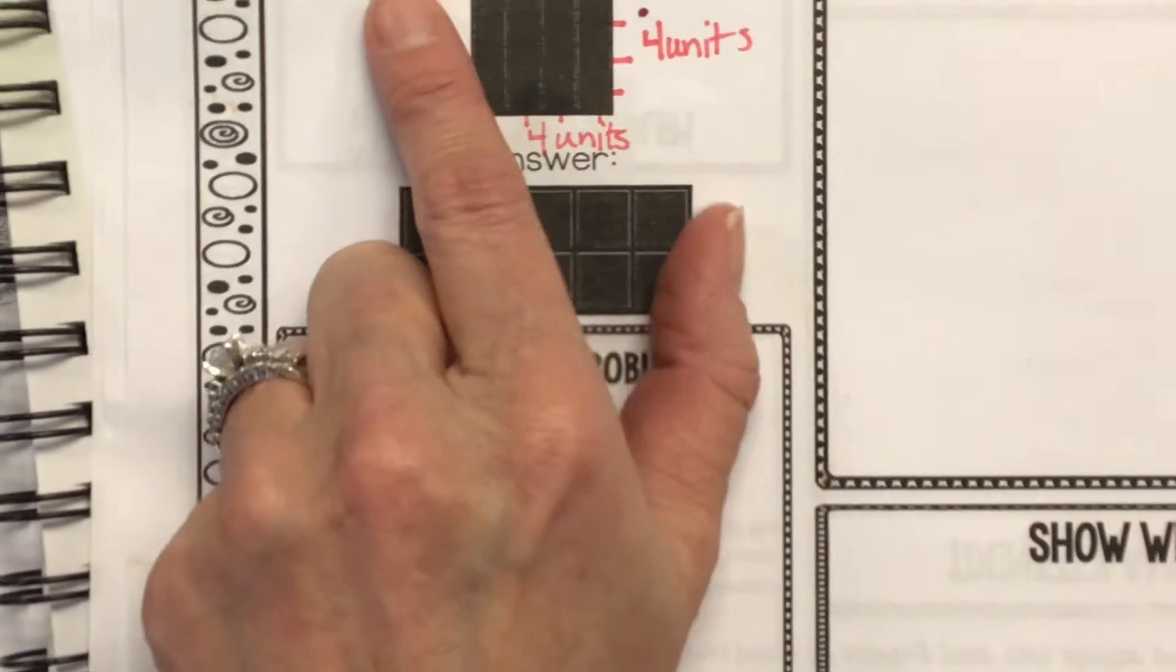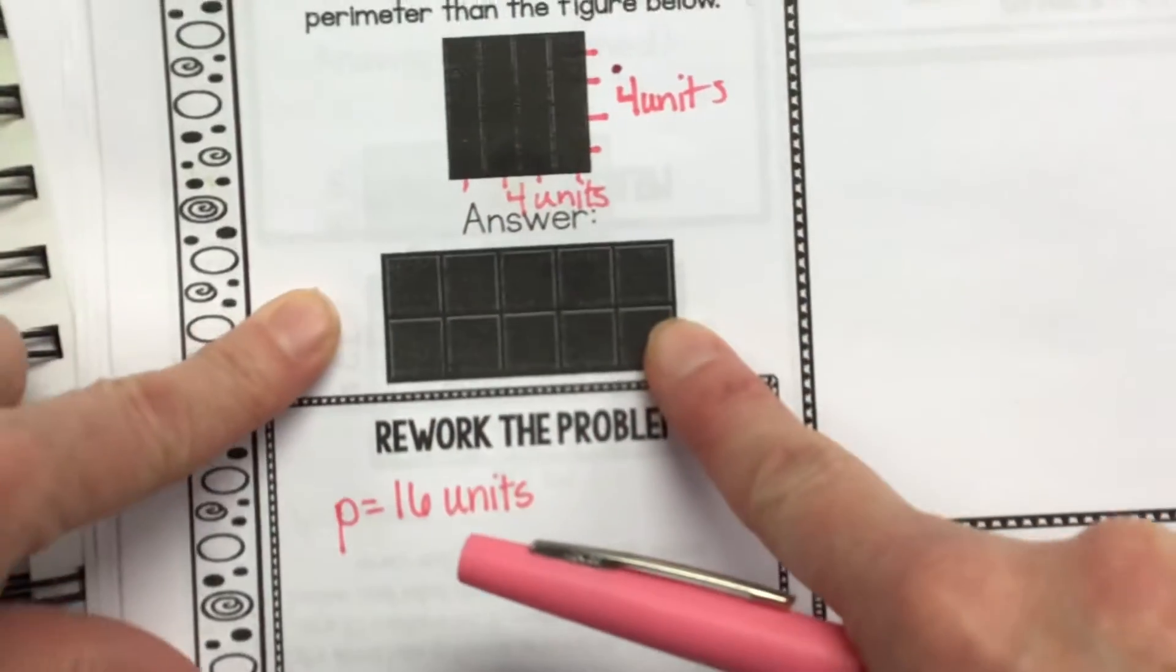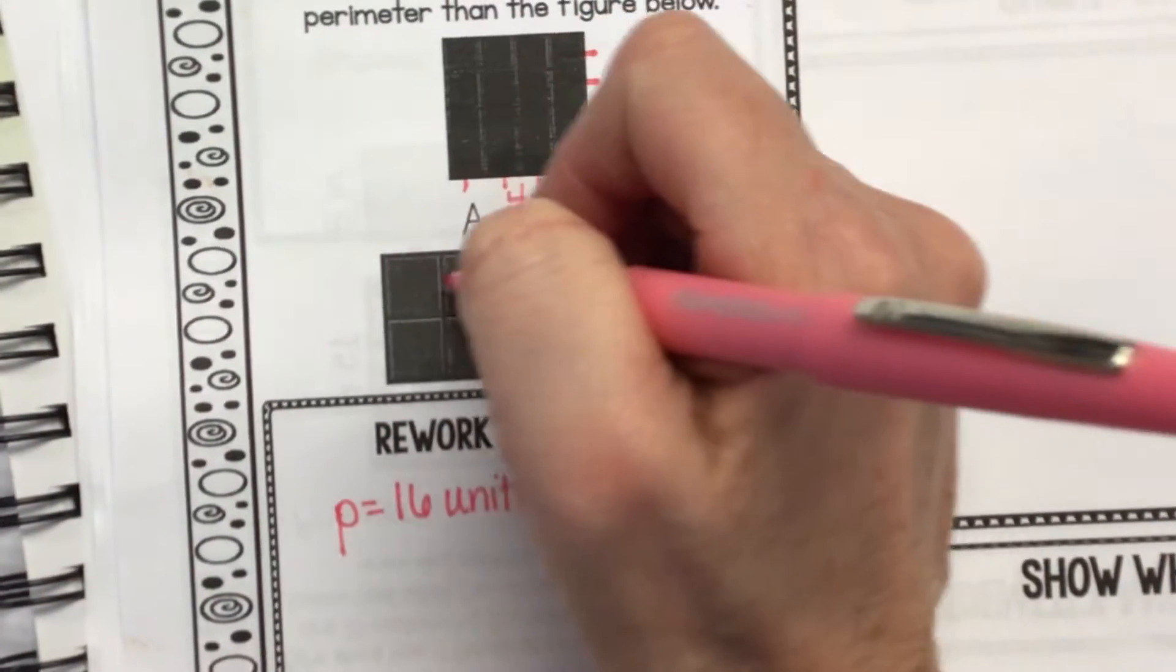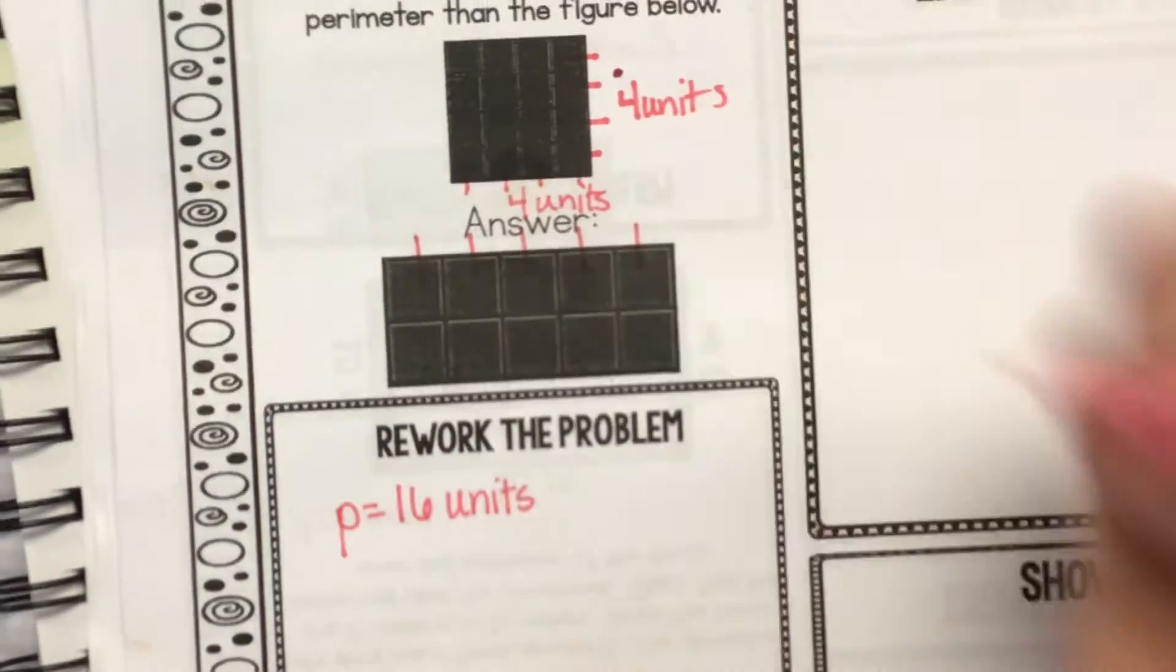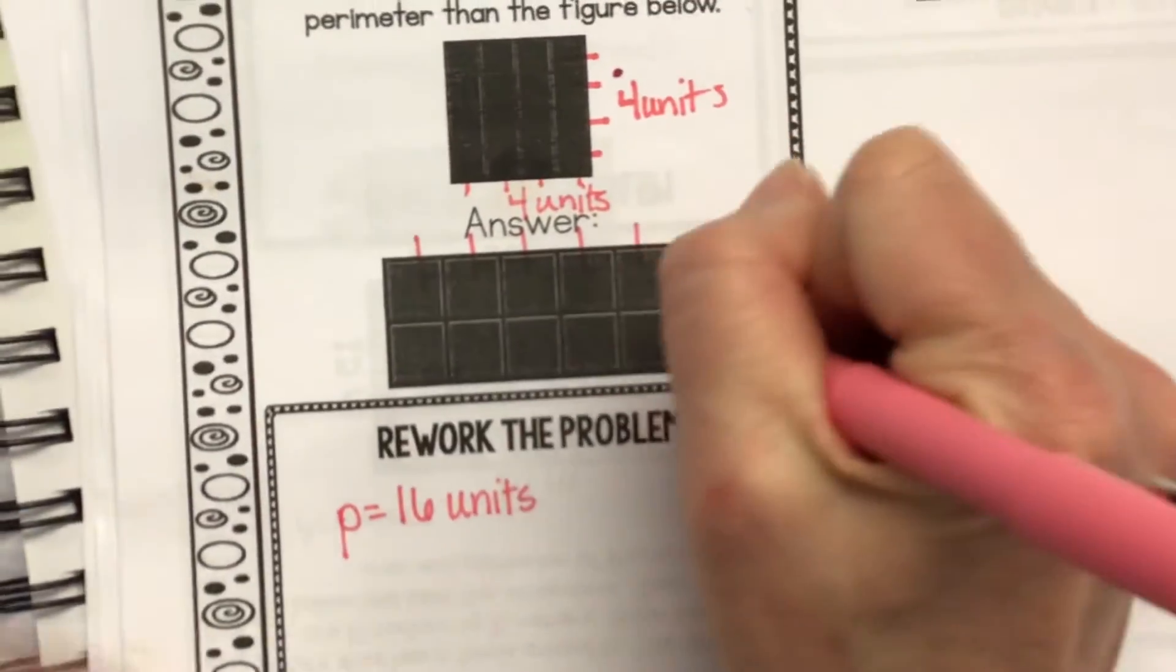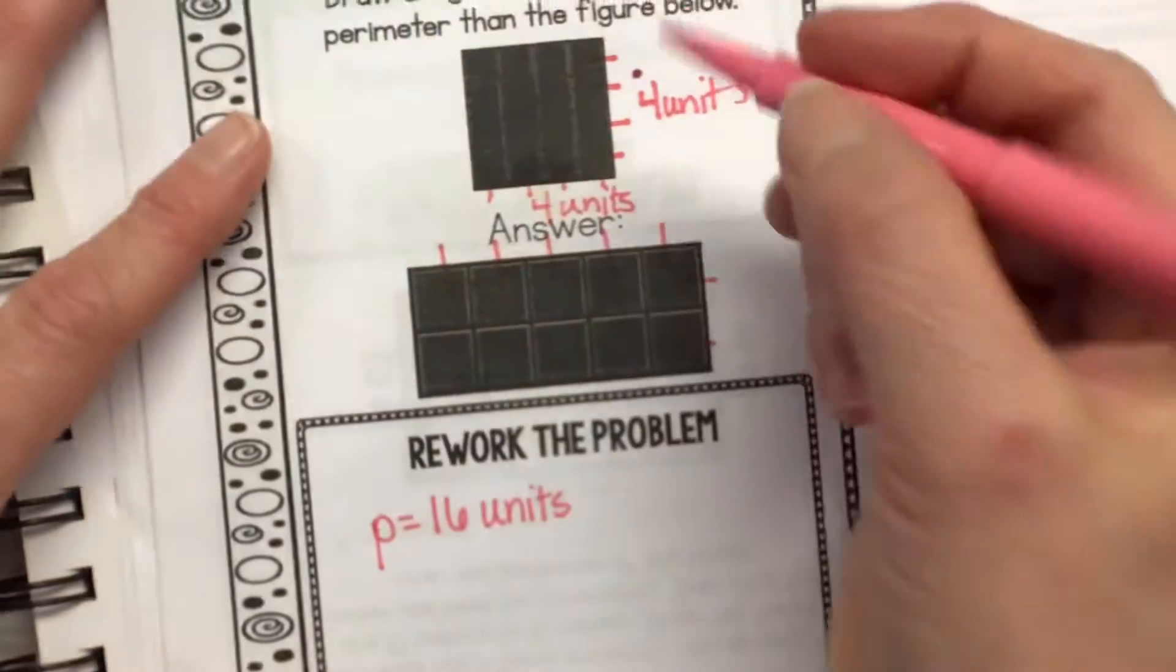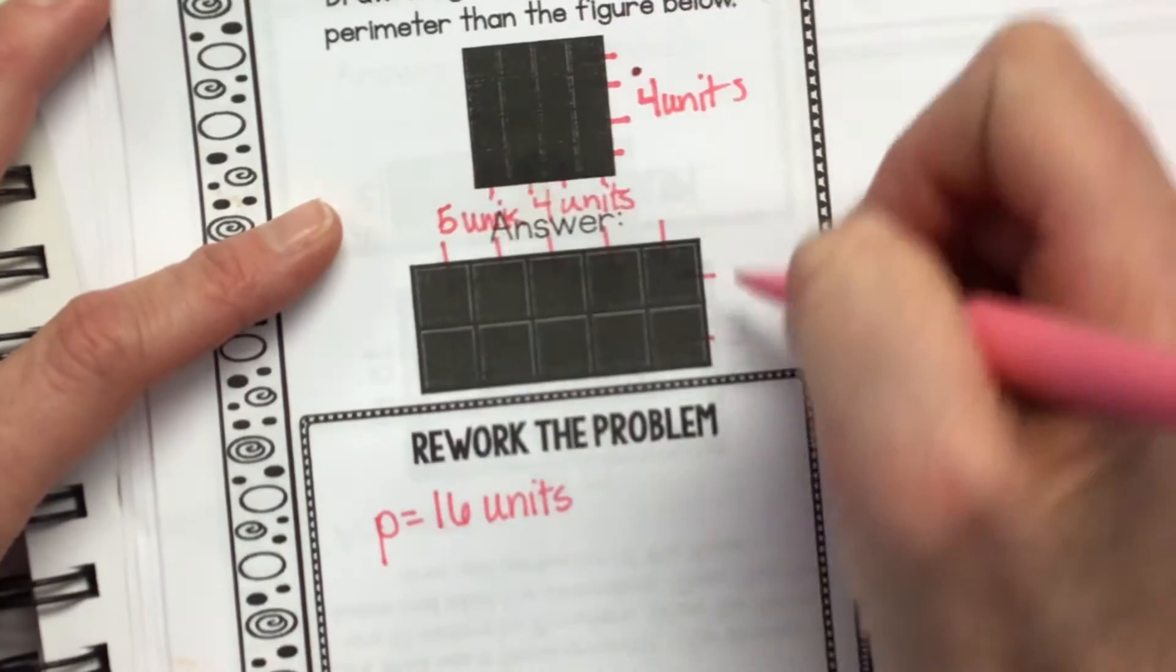So, the directions were that they needed to make a shape with a perimeter that is greater. So, what is the perimeter of this shape? What are the dimensions? What are the dimensions of this shape? Morgan. Five units by two units.